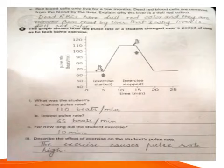Now question number five. Red blood cells only live for a few months. Dead red blood cells are removed from the blood by the liver. Explain why the liver is dull red color. The liver's color is dull red because its purpose is to always remove dead RBCs from the body. When oxygen is removed from RBCs, their color becomes dull.